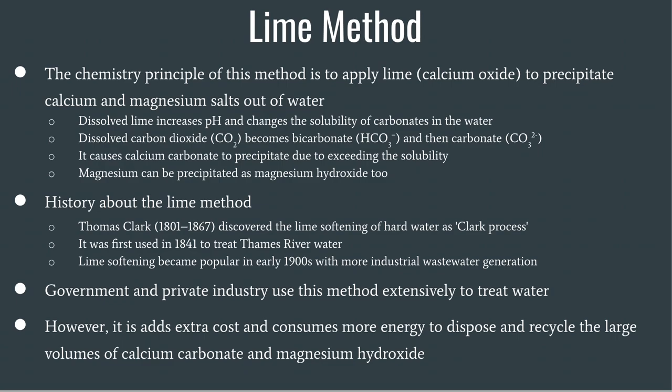The history of the lime method also goes far back. Thomas Clark discovered lime softening of hard water, dubbing it the Clark process. It was first used in 1841 to treat the Thames river water. Lime softening became popular in the early 1900s with more industrial wastewater generation, and the government and private industry use this method extensively to treat water. However, it adds extra costs and consumes more energy to dispose of and recycle the large volumes of calcium carbonate and magnesium hydroxide produced.